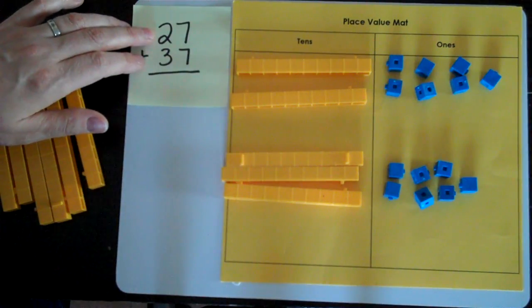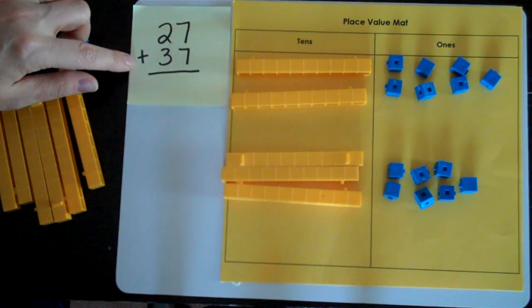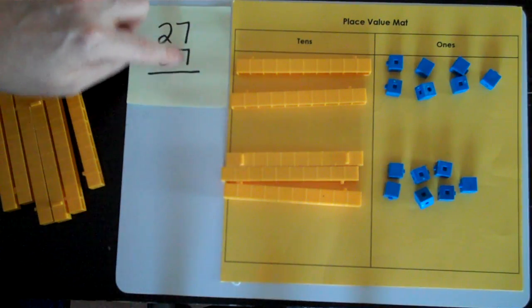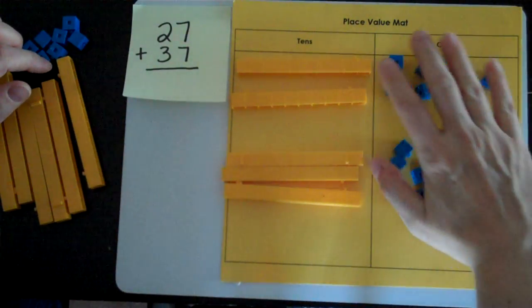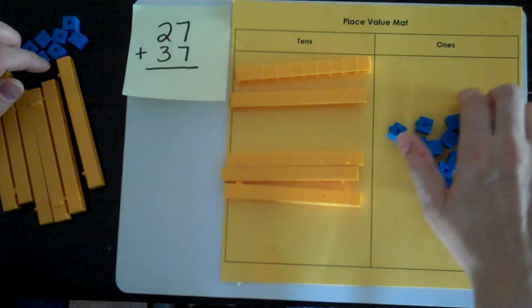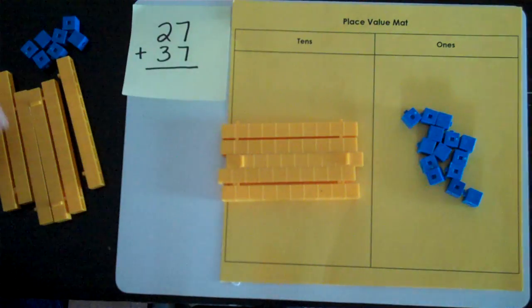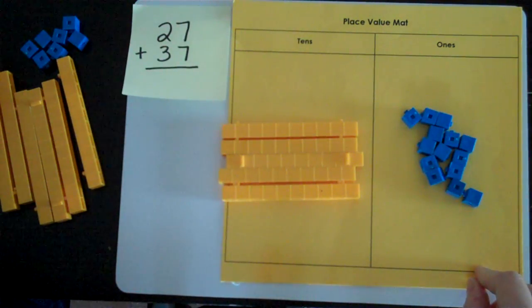I have 27 and I have 37. I check the sign and it says to add, which means we put everything all together. I'm going to start with my ones place. I'm going to bring all of these together. And now I'm going to move all my tens place together.